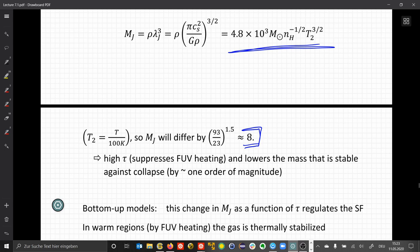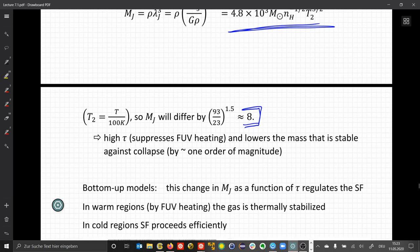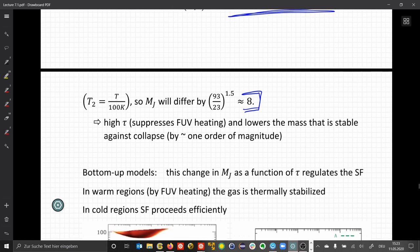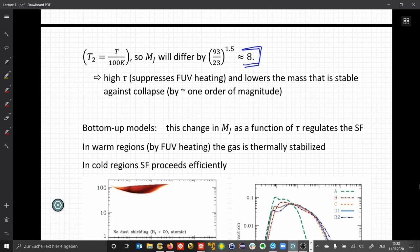It determines the tau at which the clouds become internally unstable. If the gas is warm, because we have FUV heating, it is too warm to become unstable. So it's thermally stabilized. And in cold regions, the star formation proceeds efficiently.